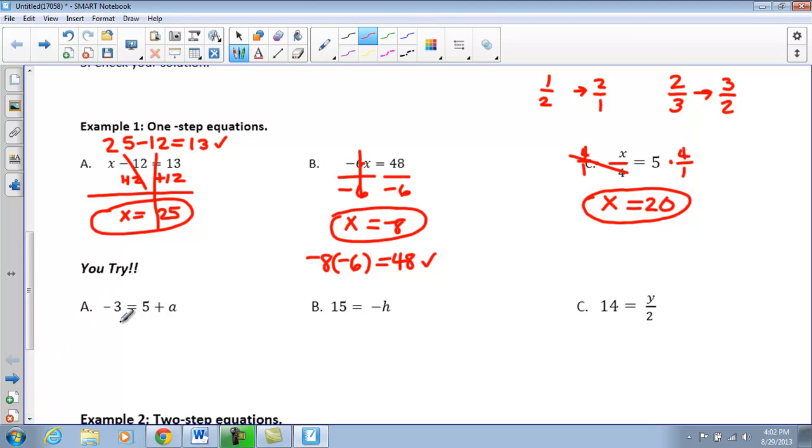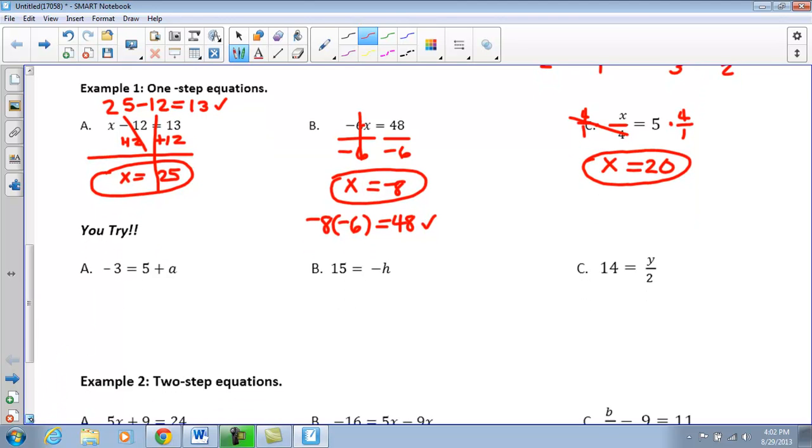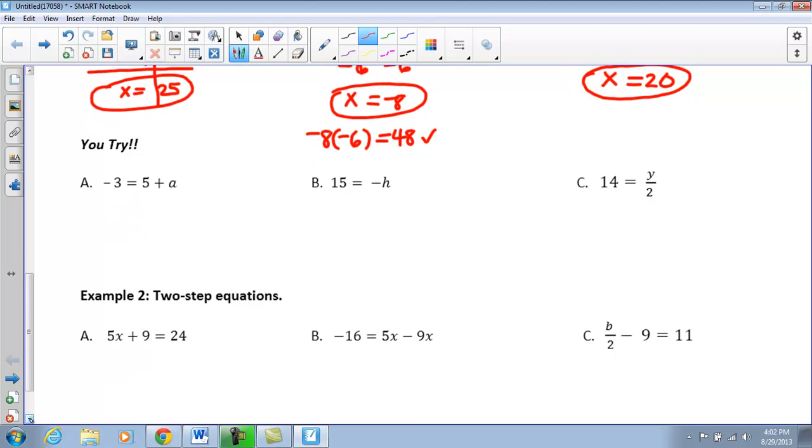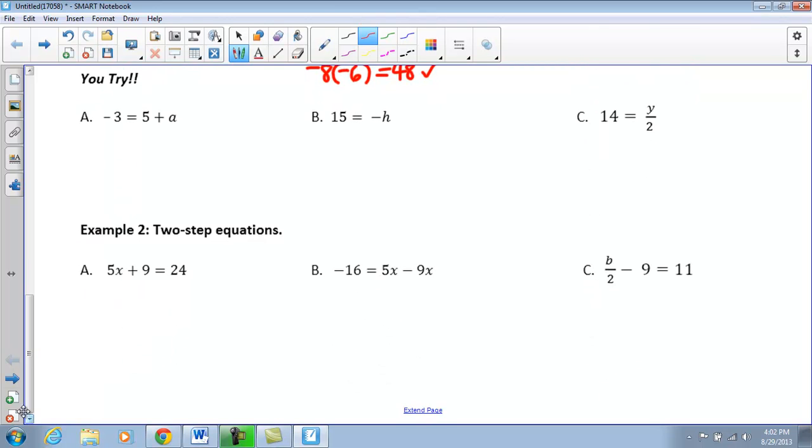The U-tries you guys are going to save for class tomorrow. The next section we're going to take a look at are our two-step equations. We need to do a second step before we isolate that variable. So if we look at the left side of our equation, we're adding 9, but we're also multiplying by 5. So the first thing we're going to do here is we're going to subtract 9 from both sides. So that cancels there, so I have 5x equals 15.